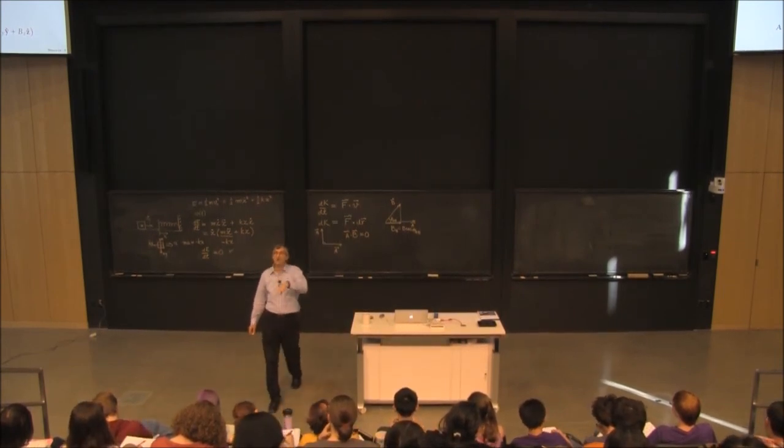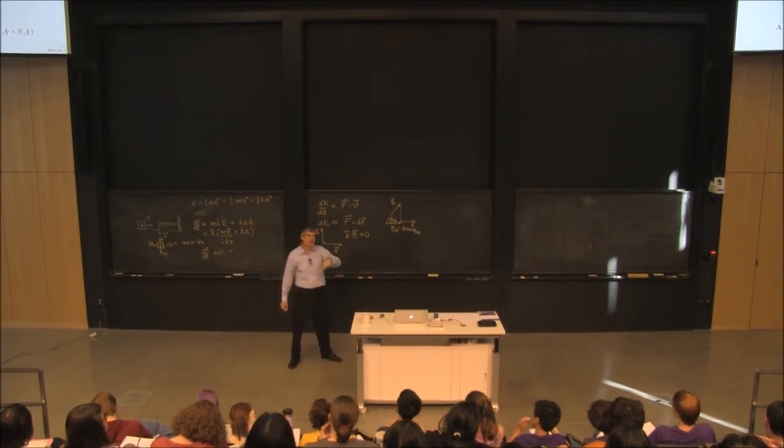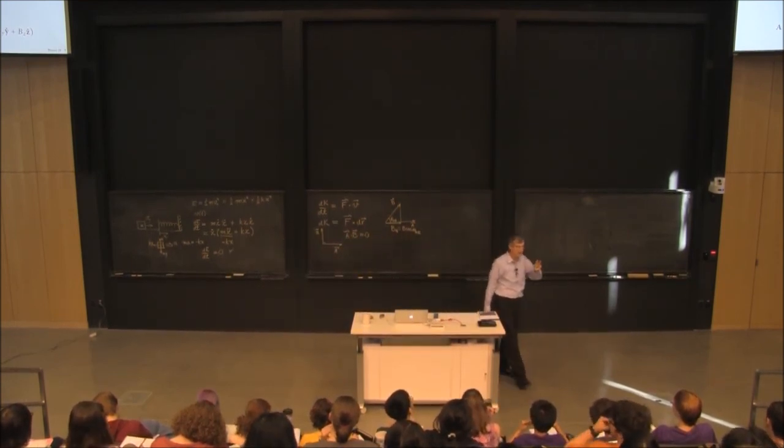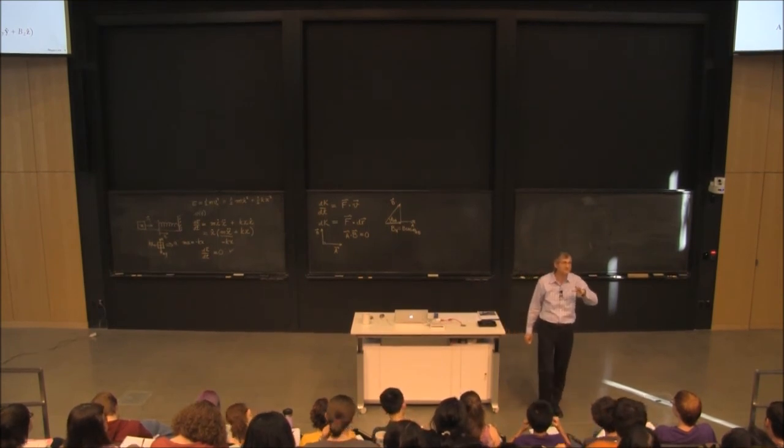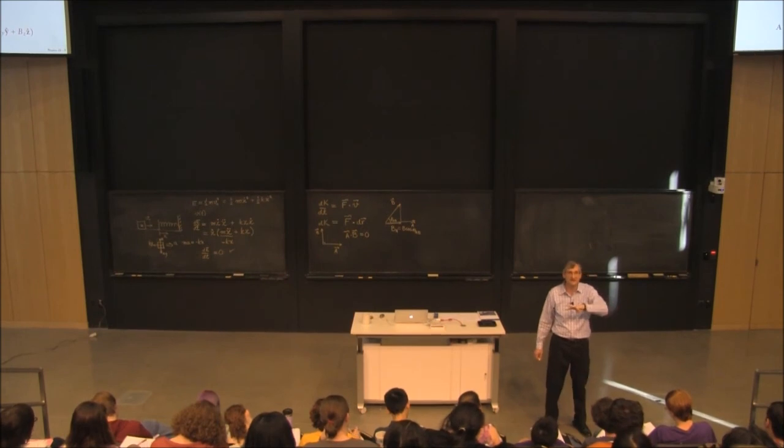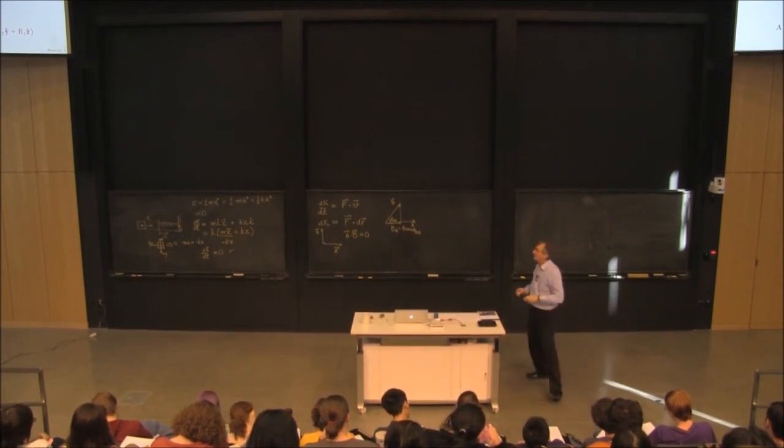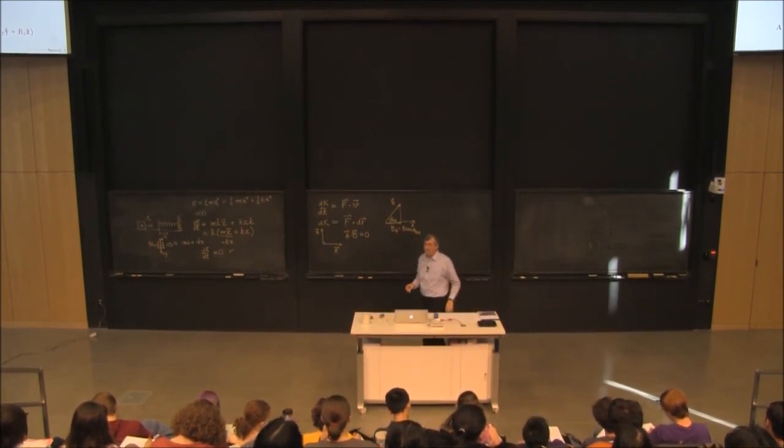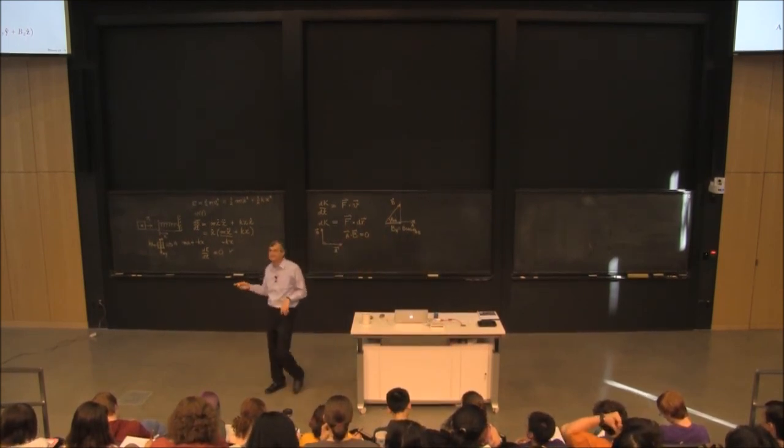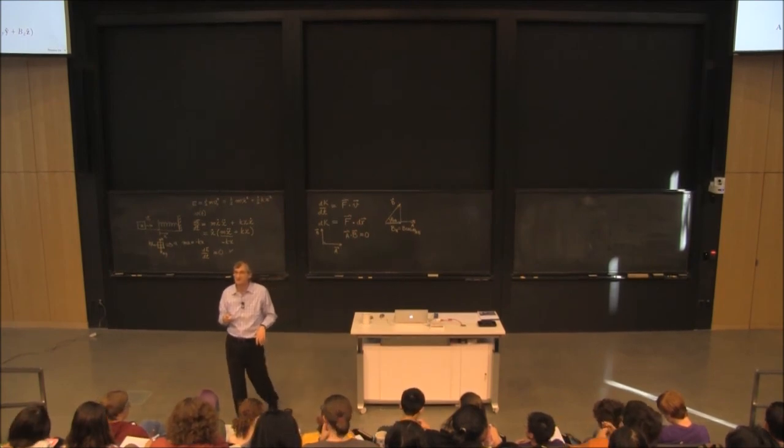So now, I want you to keep track of all three different ways of thinking about the dot product. Because in some problems, it's way easier to use one method than the other. Don't just always go back to writing out the components. It may just save you a lot of work to think about what's the component of the second vector that's parallel to the first.